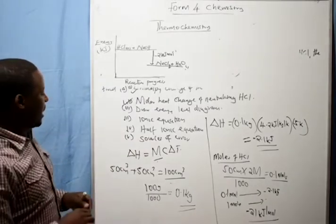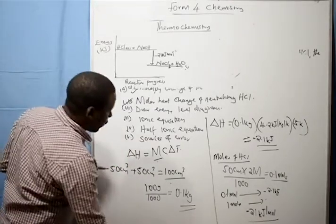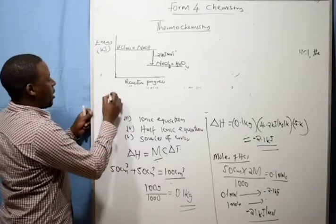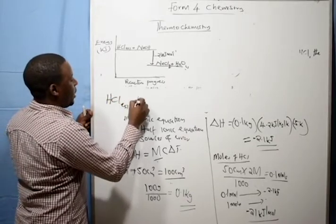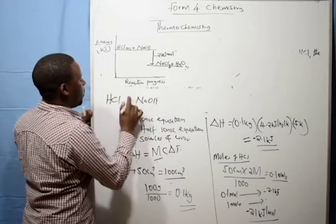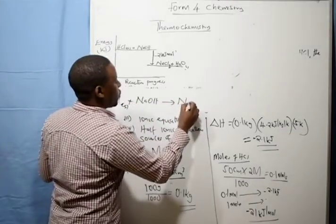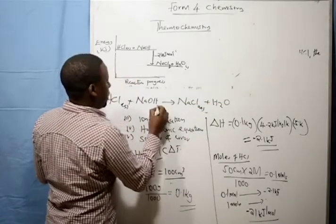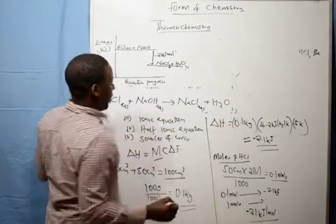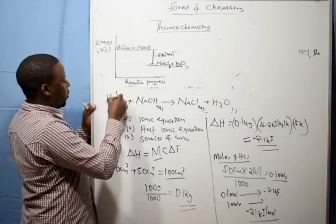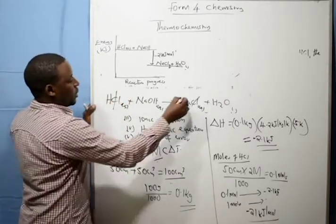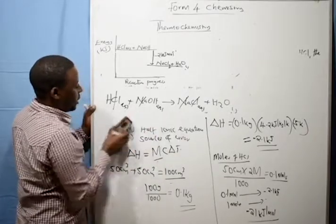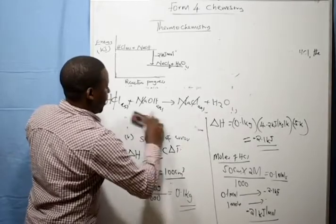Then we write the ionic equation. Ionic equation for the reaction will be HCl plus sodium hydroxide, you get sodium chloride plus water which is aqueous. In our case, chlorine and chlorine cancel, sodium and sodium cancel. Therefore the ionic equation becomes...